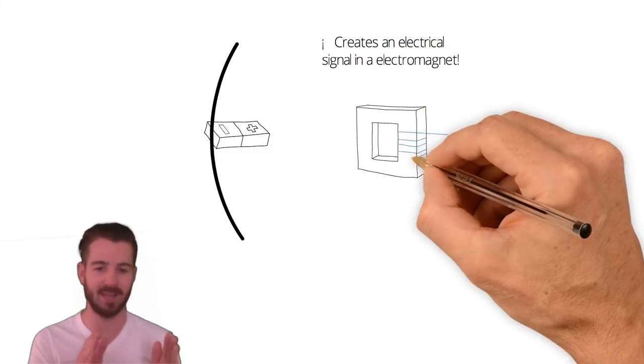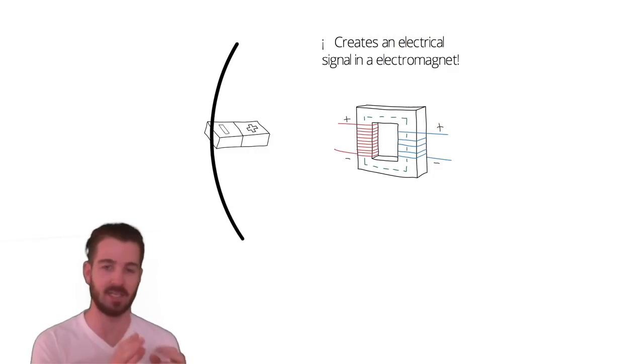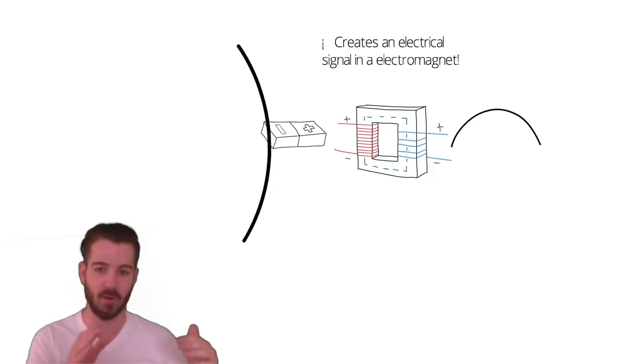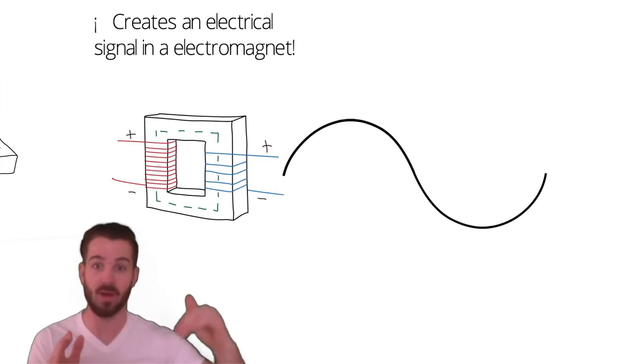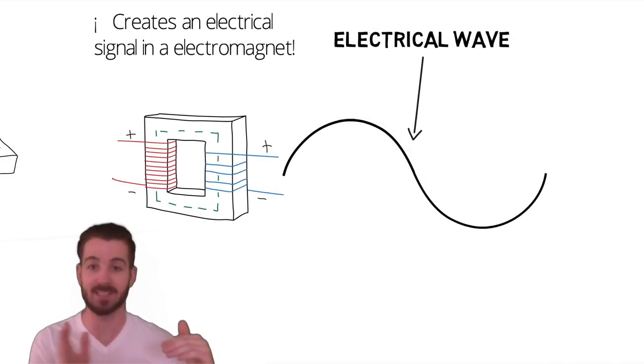What that means is that as the magnet gets closer, it pushes an electrical signal up, and as it gets further away, it pushes the electrical signal down. So you end up with an electrical wave that mimics exactly the sound wave.